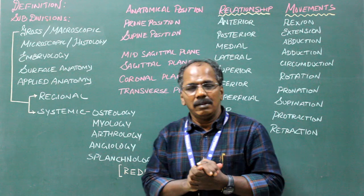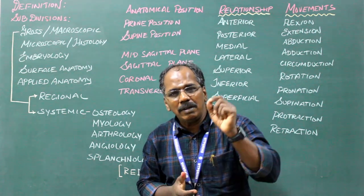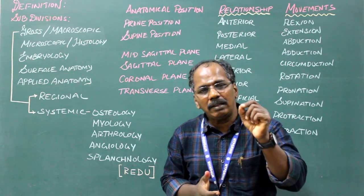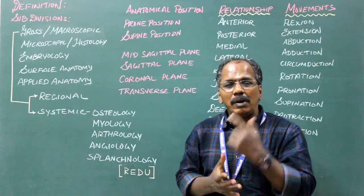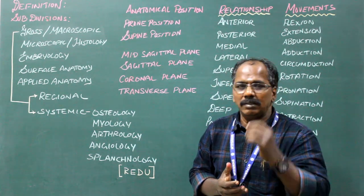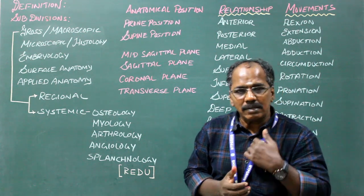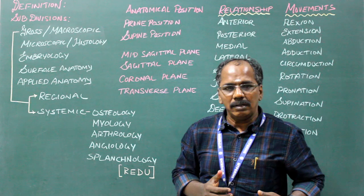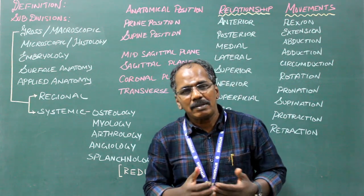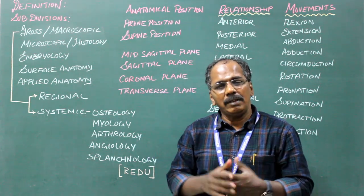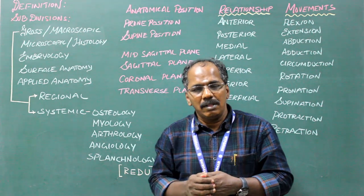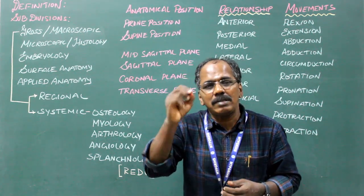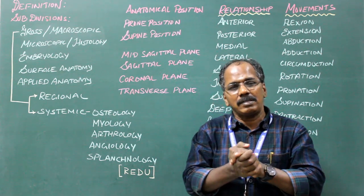In systemic anatomy, you concentrate only on one particular system. For example, in the digestive system, the oral cavity is in the head and neck region, the esophagus in the thoracic region, the stomach in the abdominal region, while the rectum and anal canal are in the pelvic region. Even though organs are in various regions, you study only the organs associated with that particular system. This is known as systemic anatomy.